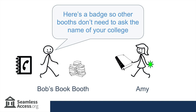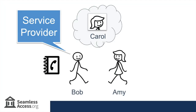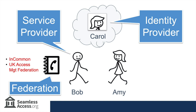Bob tells her that if the other booths see that badge, it'll save some time as she won't need to tell every booth which institution she studies at. This simple scenario is actually very close to how federated authentication works. Bob is the service provider or SP that needs to check a visitor's institutional affiliation before providing access to services. Bob's phone book is an identity federation — a trusted list that details how to talk to a set of vetted institutions and vendors. Examples of identity federations in higher education include InCommon in the United States and the UK Access Management Federation. Carol is the identity provider or IDP, the institution's federated authentication service that confirms a visitor's identity. And while our characters in this scenario speak English, in reality, Bob, Carol and the Federation communicate using a language called Security Assertion Markup Language, or SAML for short.